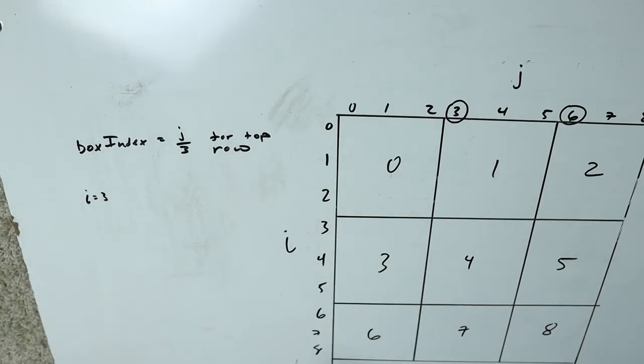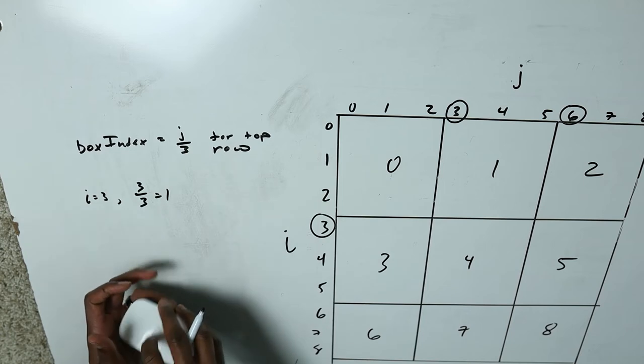Now for the mid row we do something similar with the rows. The next box starts at a multiple of three. From zero to two, i divided by three equals zero. From three to five, i divided by three equals one. So if i equals three, i divided by three gives us one.